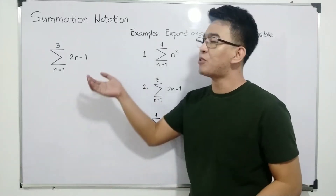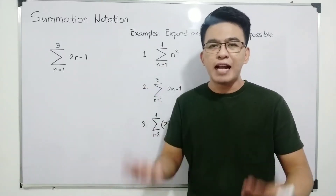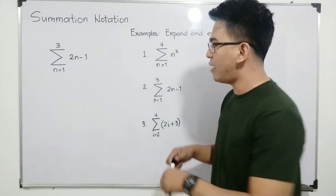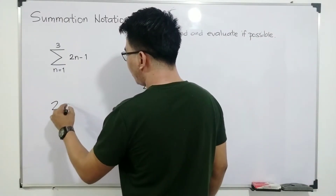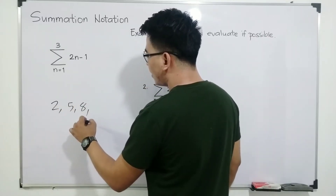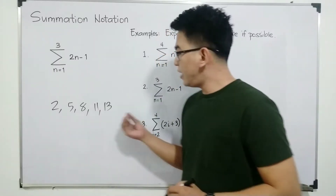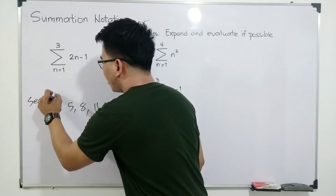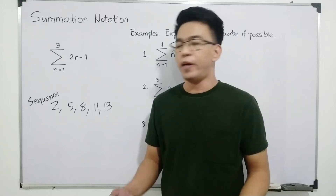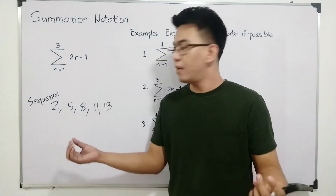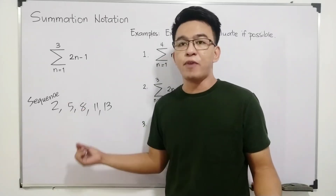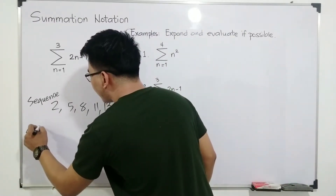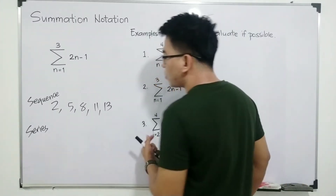Now guys, before we start discussing the summation notation and the sigma notation, let me clarify first what is the difference between the sequence and a series. A sequence is a number pattern with a pattern and each term of the sequence is separated by a comma. While your series — when we say series, we are just adding up the terms of a sequence.